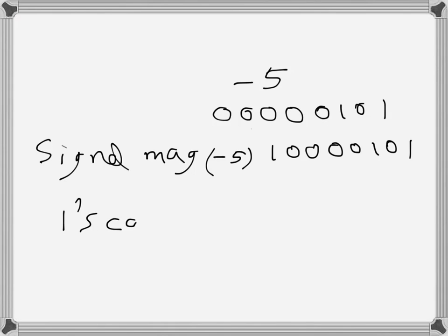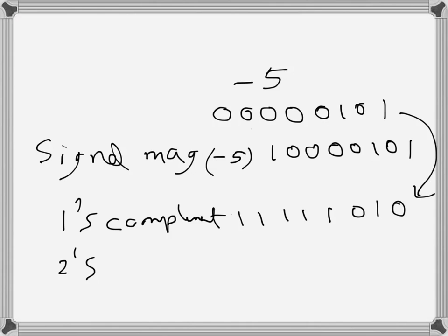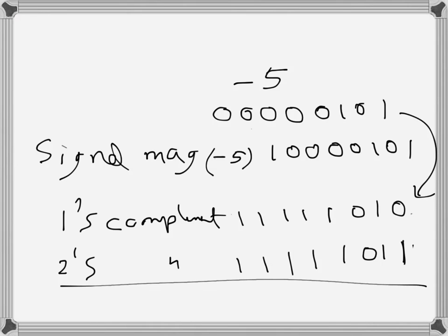For one's complement, we take positive five (00000101) and flip all bits, giving 11111010 — that is negative five in signed one's complement. For two's complement, we keep the rightmost '1' and flip everything to its left, giving 11111011 — that is the two's complement representation of negative five. These are the three signed representations of negative five.